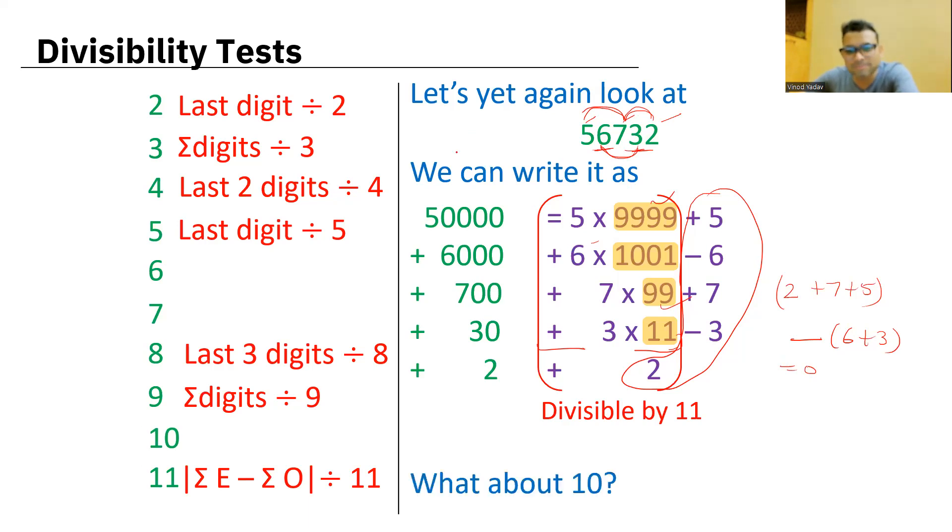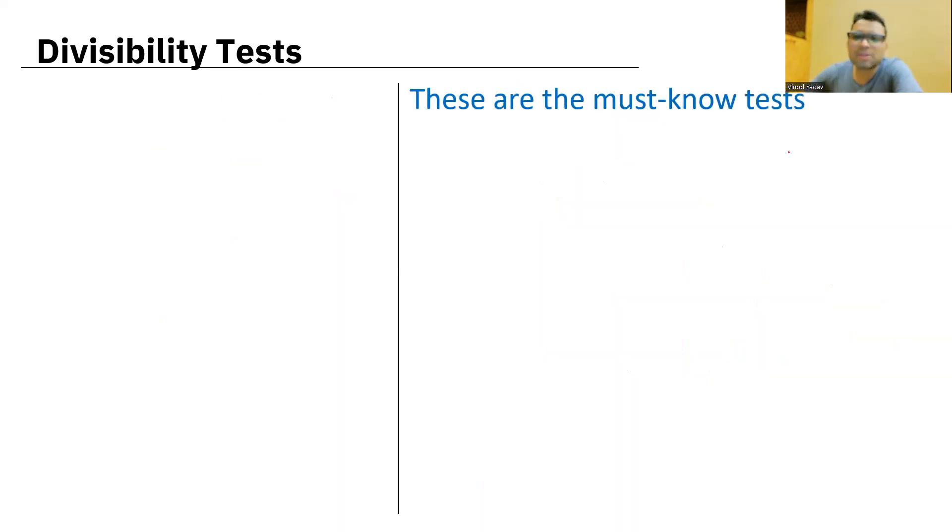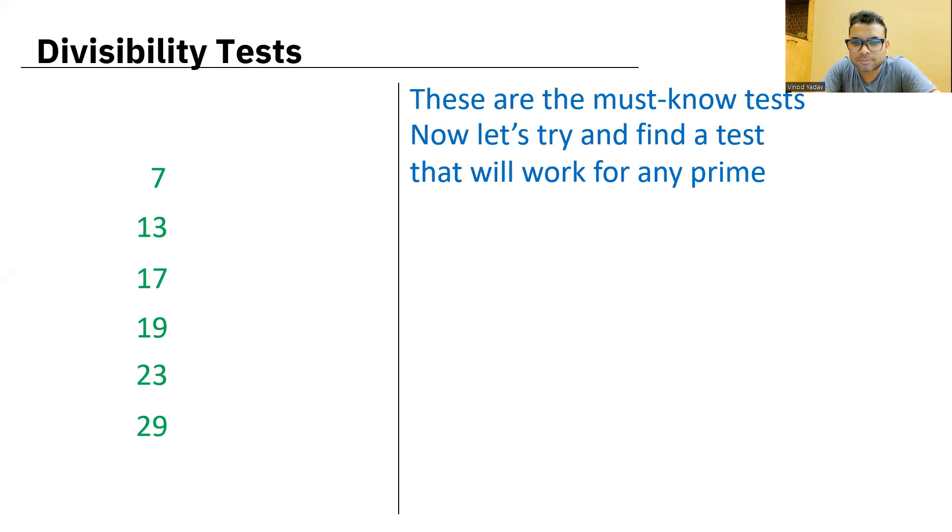Now, what about 10? Simple, very simple. Number should end in zero. These are like the must know tests. And there are some more that will work for any prime number. For example, see, these are not mandatory and you can forget it. It's fine. In these cases, I would prefer dividing the given number by these numbers directly, direct division. But just for extra knowledge, I'm sharing this with you. So this 10s and units. So 10s is 1 and units is 5. What does this mean? Let's check.